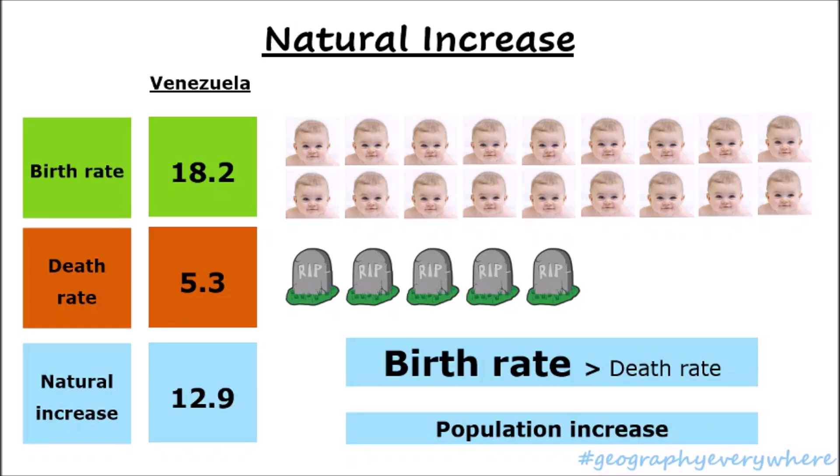If you have a natural increase of 29, that means the population is increasing much faster than Venezuela, which has a natural increase of 12.9. Canada's natural increase, for example, was 2.6 — the population is increasing, but at a much slower rate. So the higher the natural increase, the faster the population is increasing.